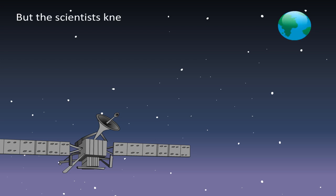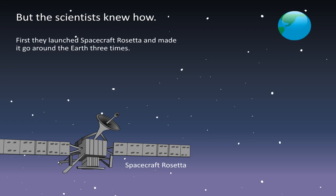But the scientists knew how. First they launched Spacecraft Rosetta and made it go around the Earth three times. Every time it went around us, it gathered more speed using the Earth's gravity like a slingshot.